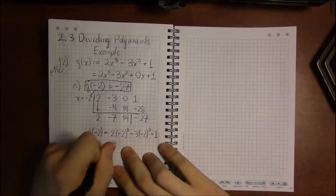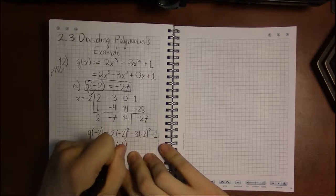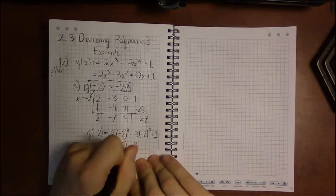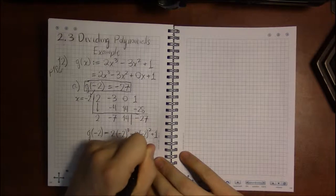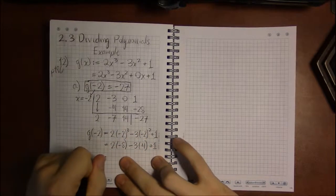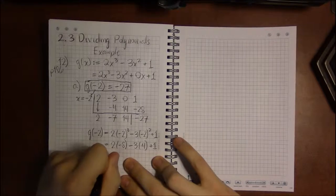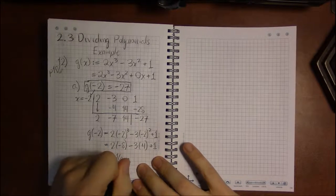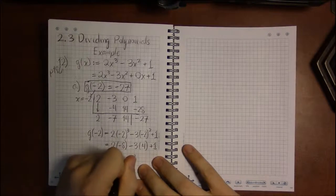So minus 2 cubed, I think you'll find, is minus 8. Minus 2 squared is 4.